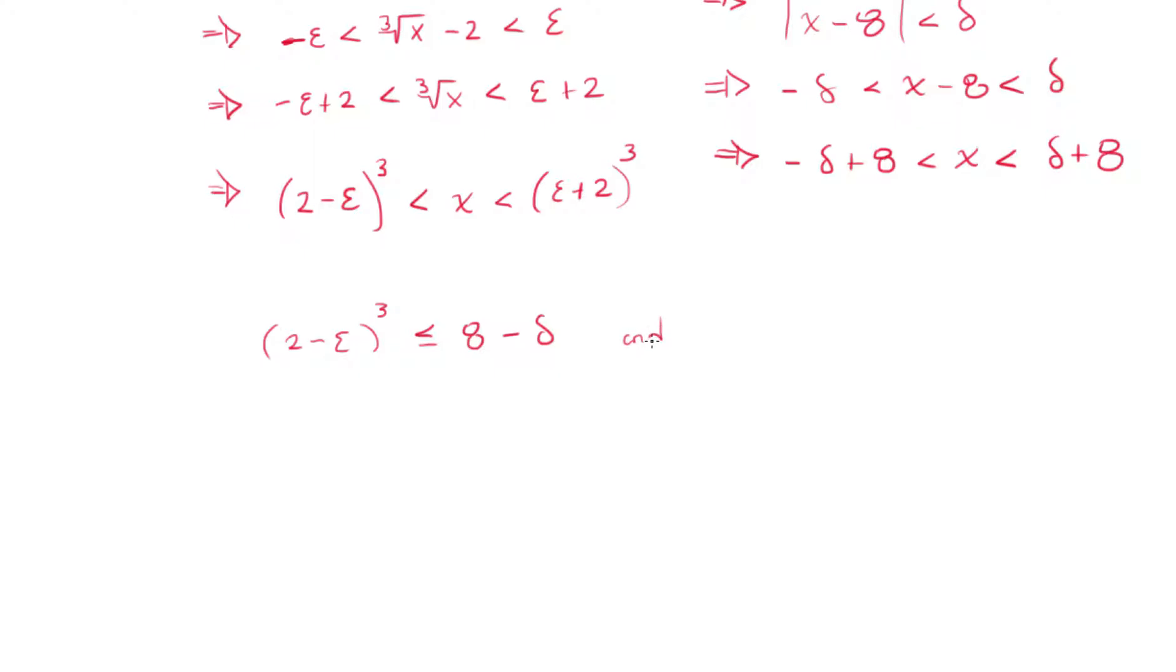And I'm going to make this side, so epsilon plus 2 cubed, greater or equal, because I want it inside the bound, greater or equal than delta plus 8.